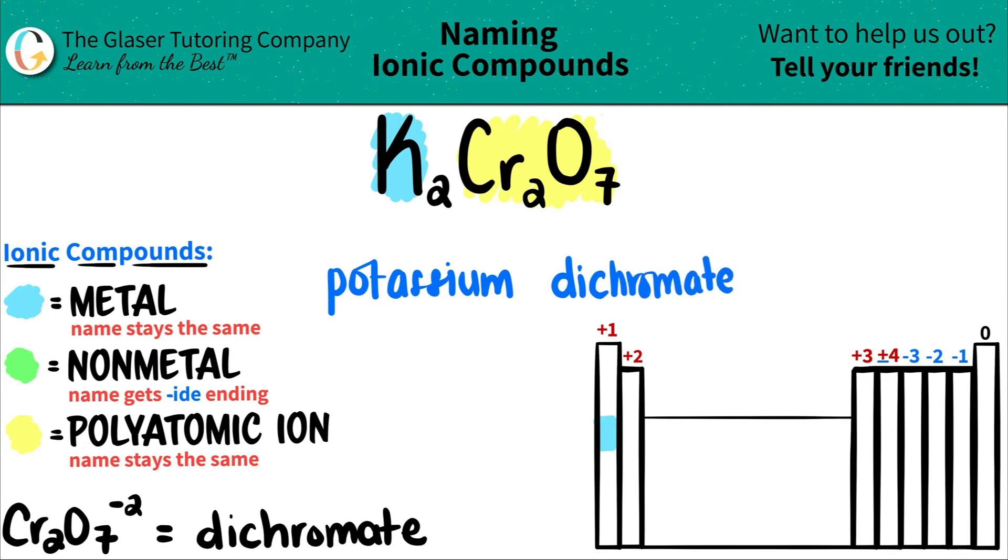Now since it's ionic, just do a double check. Do I need a Roman numeral here? Well, Roman numerals are for transition metals. Potassium is not in this little group here. So I don't need a Roman numeral. So that means that we're done.